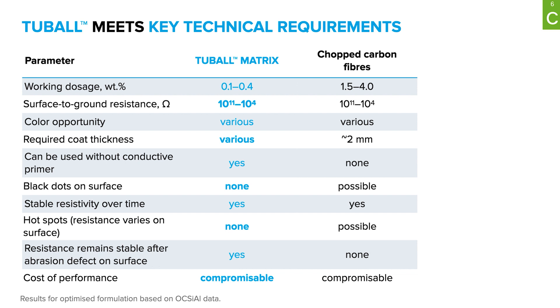Sometimes you can observe hot spots — an insufficient level of resistance in specific areas. You can also encounter black dots on the surface, which raises concerns about the floor's appearance. Additionally, if you damage an antistatic floor with chopped carbon fiber, you can sometimes lose the antistatic properties. With tubal graphene nanotubes, or TuboMatrix — a concentrate of pre-dispersed tubal graphene nanotubes — you can avoid and minimize all these risks.